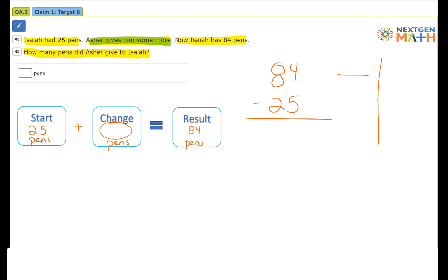Let's use our place value chart to solve this. We have our tens and our ones. We have 84, which is eight tens and four ones, and we're going to subtract two tens and five ones.